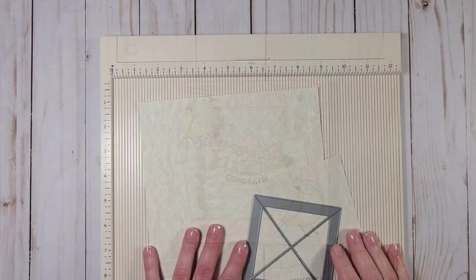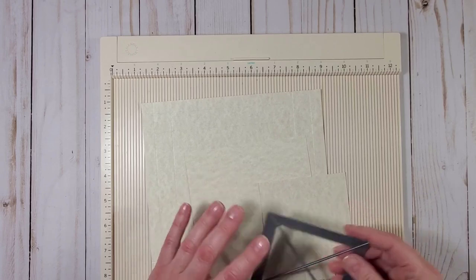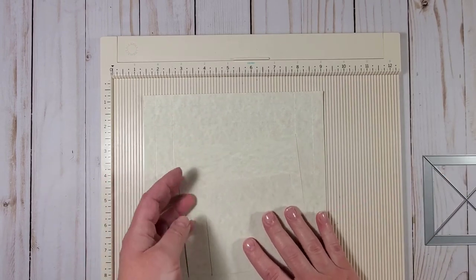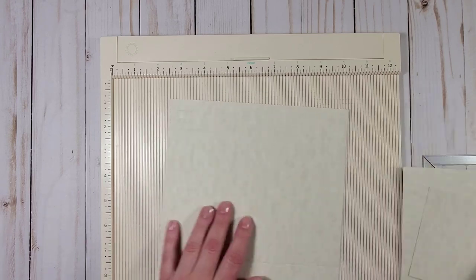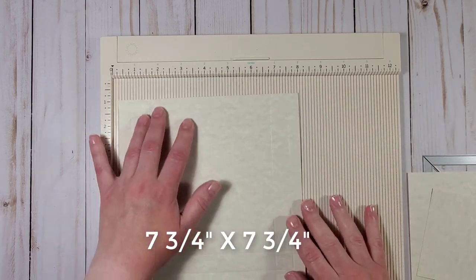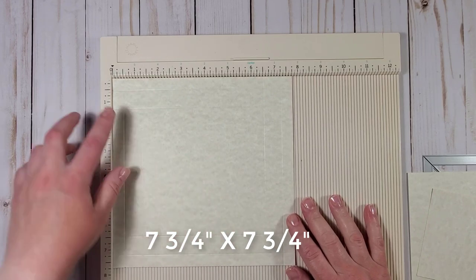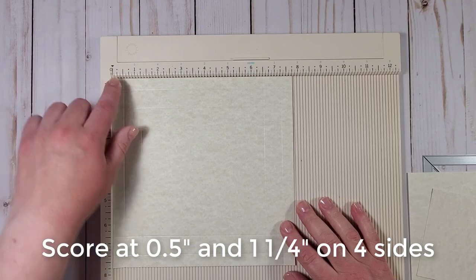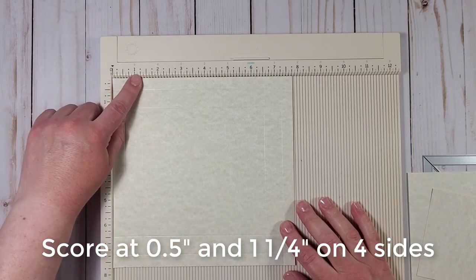For creating the shadow box you will need a few pieces of cardstock and I have all of them right here. The largest one measures seven and three quarters by seven and three quarters and it is scored on four sides at half an inch and an inch and a quarter.